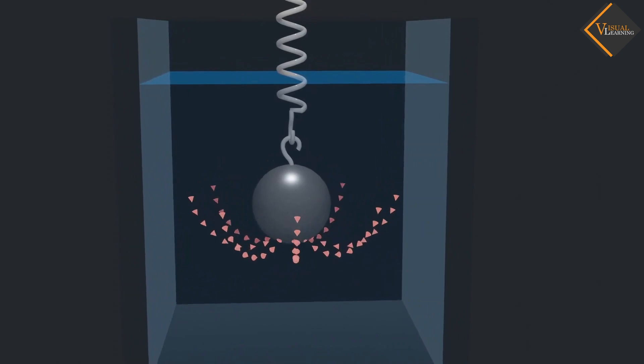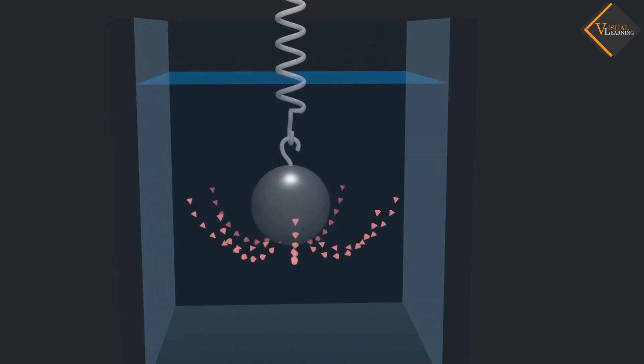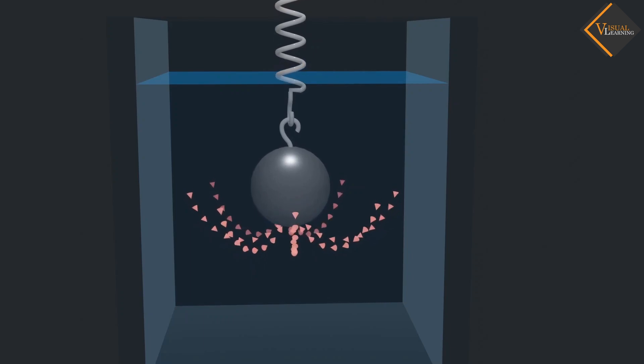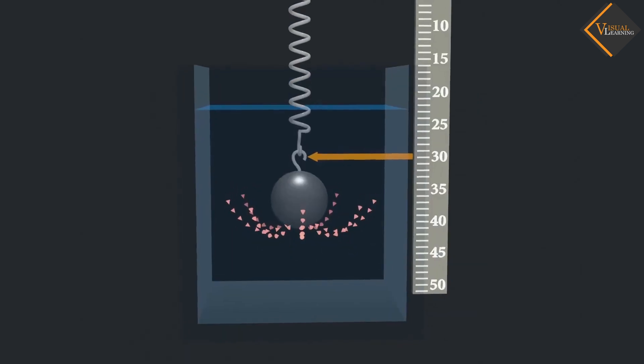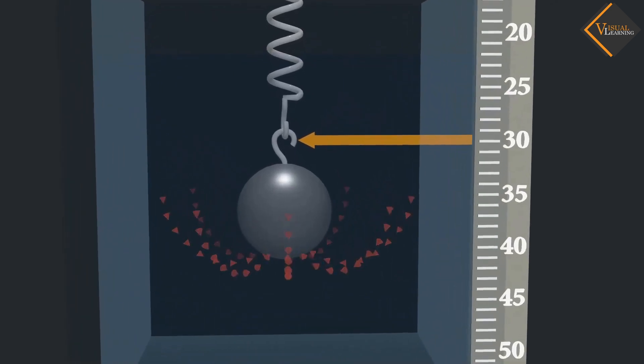Because an upward thrust acts on the iron ball, the iron ball moves up a little. And this can be measured by the scale.